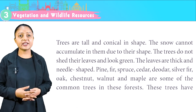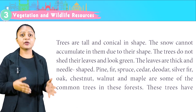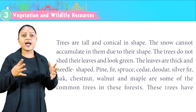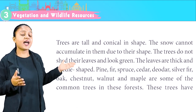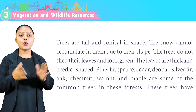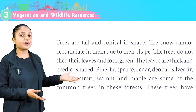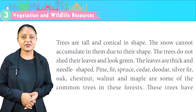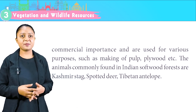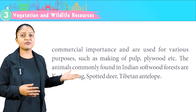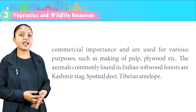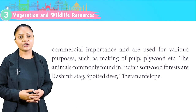Trees are tall and conical in shape, so snow cannot accumulate on them. The trees do not shed their leaves and look green. The leaves are thick and needle-shaped. Pine, fir, spruce, chitar, deodar, silver fir, oak, chestnut, walnut and maple are some of the common trees in these forests. These trees have commercial importance and are used for various purposes such as making pulp and plywood. The animals commonly found in Indian softwood forests are Kashmir stag, spotted deer and Tibetan antelope.